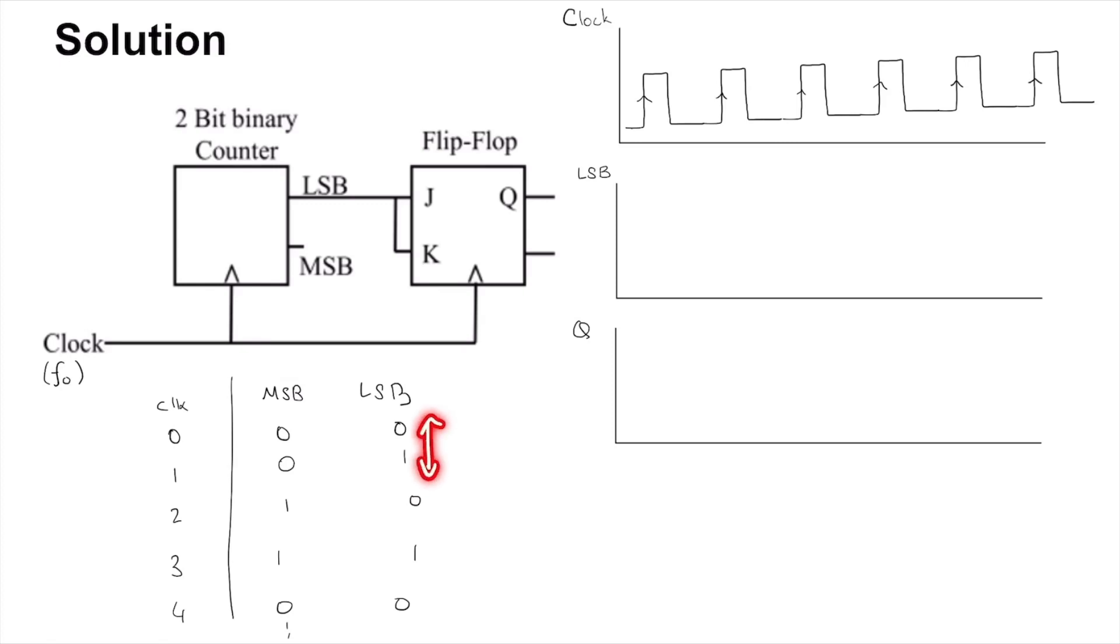That is, there is a frequency division by 2 happening at the LSB of the binary counter. So let's count our clock edges: this is now 1, 2, 3, 4, 5, 6. At 1 you are going to have the LSB go high and at 2 the LSB will go low again.